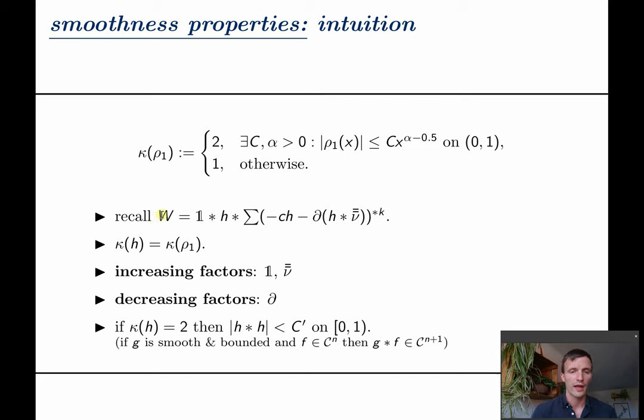Another particular aspect is the coefficient κ which decides whether to add one or two degrees of regularity. To understand this we recall the asymptotic version of the series expansion which looks like this. One easily shows that κ of h equals κ of ρ and now the idea is to prove that a sum like this is as smooth as its parts. So let's assume h is smooth and start counting.